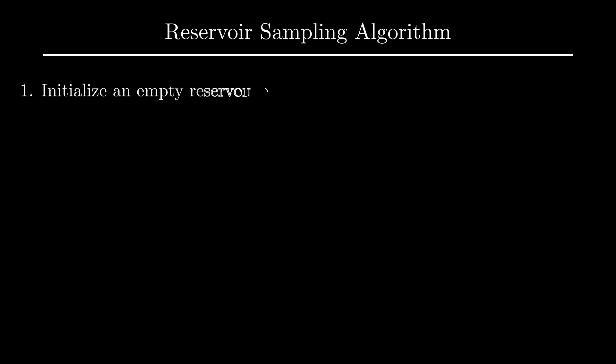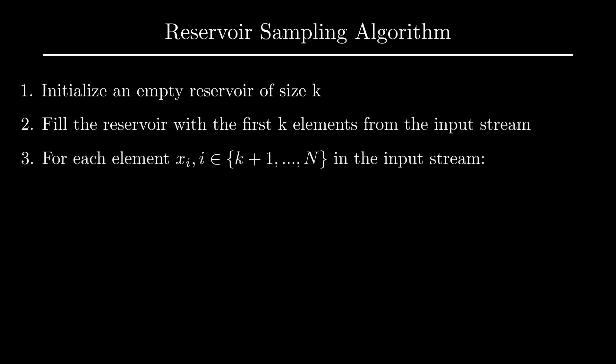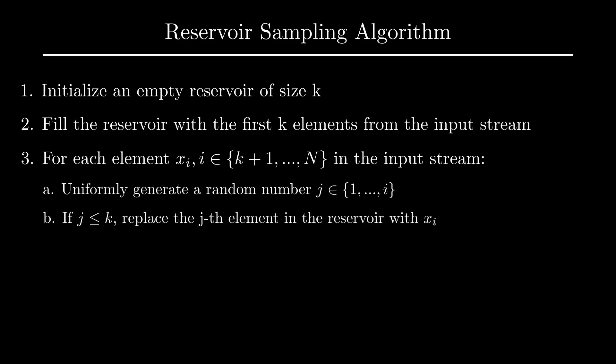Before we demonstrate that the idea presented produces the fairness we expect, let us define it more formally. Initialize an empty reservoir or waiting room of size k and fill it with the first k elements from the input stream. For each member xi in the input stream, uniformly generate a random number j from the set 1 to i. If j is less than or equal than k, replace the jth element in the reservoir with xi. Otherwise, discard xi. The pool now contains k elements randomly chosen from the stream. This efficient algorithm, known as reservoir sampling, is widely used in data science for uniformly and randomly select a fixed subsample from a data stream.